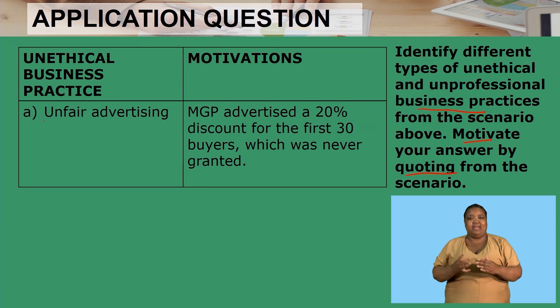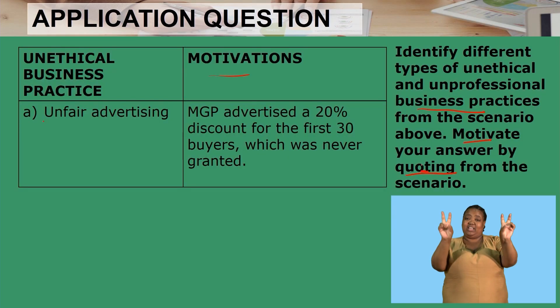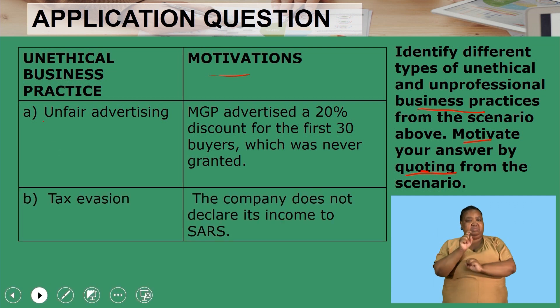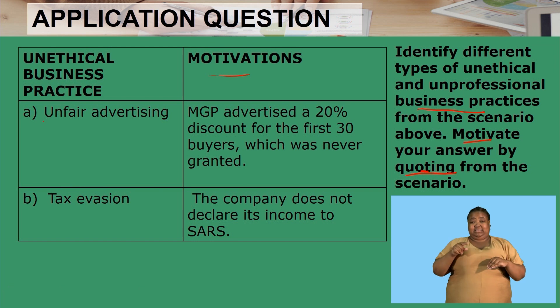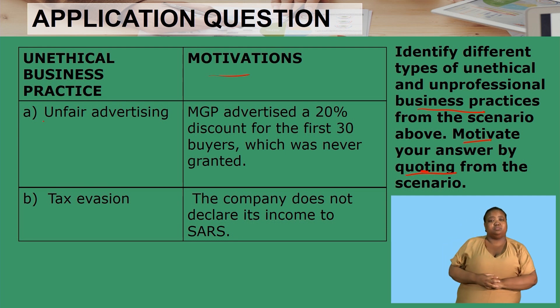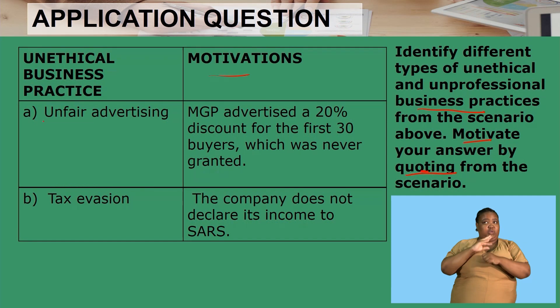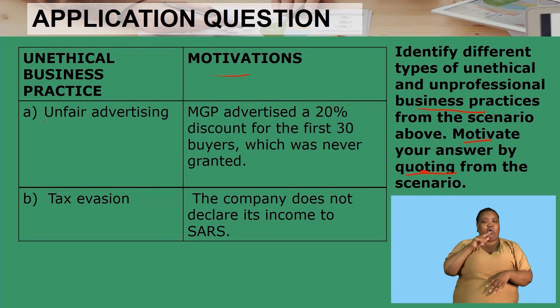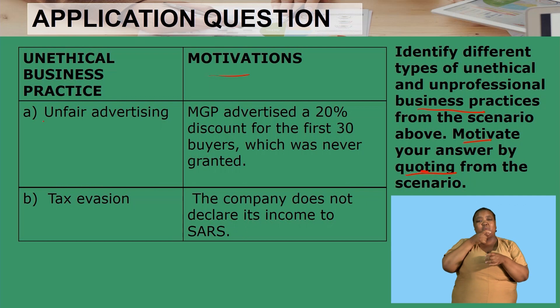Nothing was changed, nothing was added — we took it as is. Remember, when they say motivate by quoting, nothing should be changed. The second unethical business practice is tax evasion. The company does not declare its income to SARS. They are submitting false information or false financial statements to evade taxation. That is an unethical business practice.